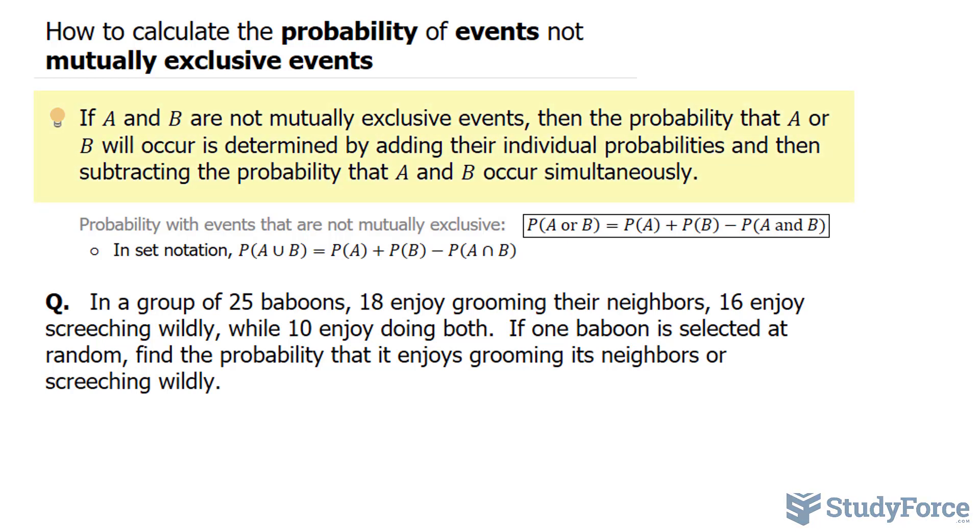If we have events, let's say A and B, that are not mutually exclusive, meaning that they can both occur at the same time, then the probability that A or B will occur is determined by adding the individual probabilities of A and B.